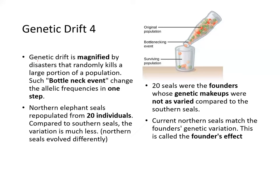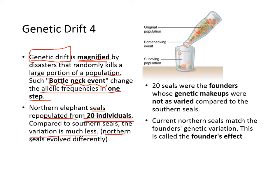Another example is the bottleneck. This genetic drift effect is magnified by disasters that randomly kill a large portion of a population — that's the bottleneck effect. These events can change allelic frequency in one single step. Northern elephant seals repopulated from just 20 individuals, so compared to southern seals, variation is much less. Those 20 seals are the founders, and currently northern seals match the founder's genetic variation — that's called the founder's effect, which follows a bottleneck event.